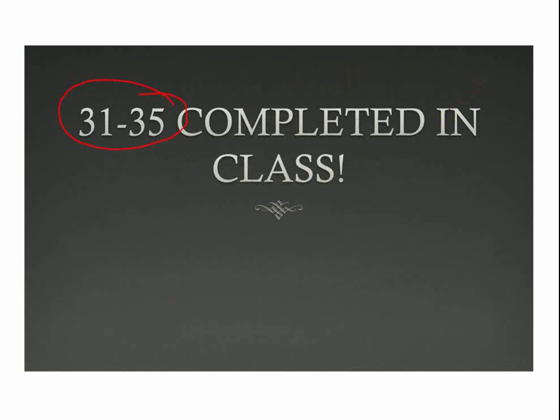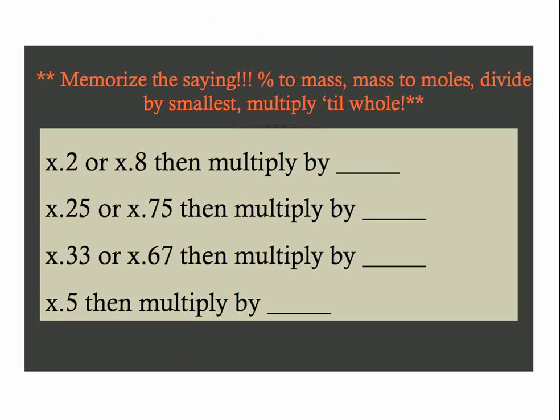Let's look at the sequence. And you want to memorize this. If I was a little better at this, maybe I need to enlist some help from students, they could write a song: percent to mass, mass to moles, divide by the smallest, multiply till whole. You want to learn to say that many times. That's a brain dump list so that you have a checklist for problem solving.